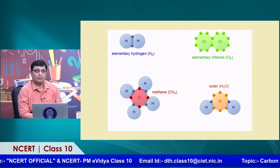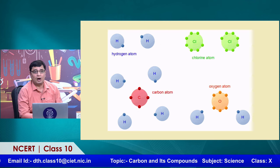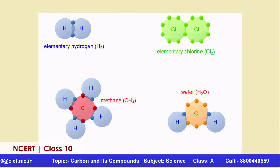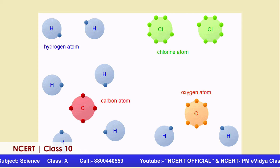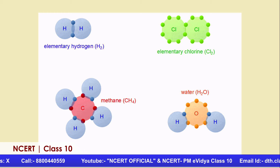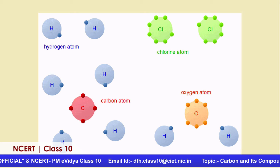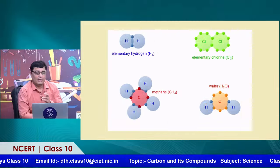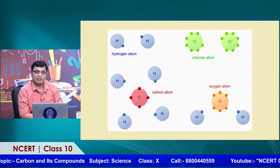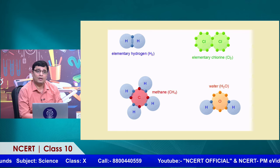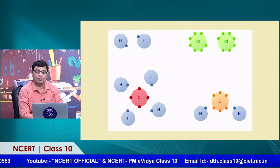Looking at diagrams for the formation of these different molecules: the first example is the hydrogen molecule, showing how H2 is formed — one electron from each hydrogen atom is shared. For CH4, 4 valence electrons of carbon each share one electron from a hydrogen atom. Similarly, for water — the most important compound in life — oxygen has 6 valence electrons, and 2 hydrogen atoms combine with 1 oxygen atom, forming single bonds between hydrogen and oxygen, giving the water molecule.